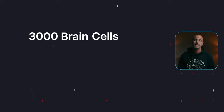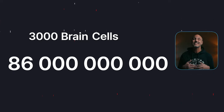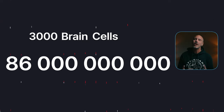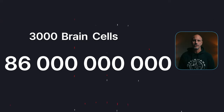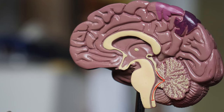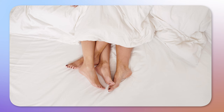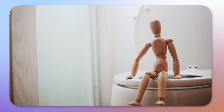Only 3,000 brain cells out of your 86 billion brain cells regulate your aggression. The VMH is located within your hypothalamus, which regulates all the other drives such as your hunger, thirst, the sex drive, and when it's time for you to go to the toilet.